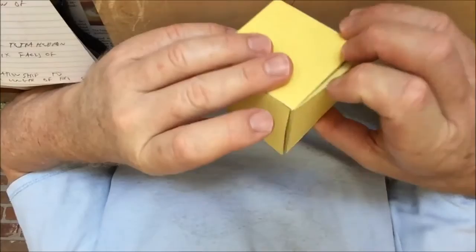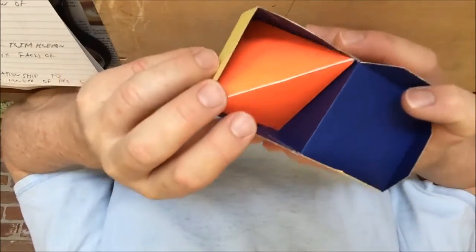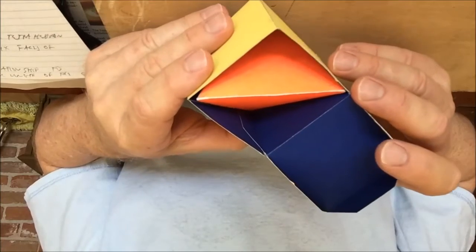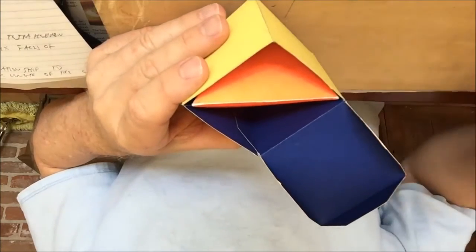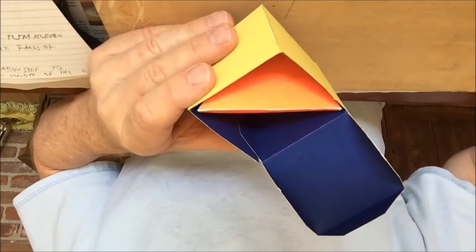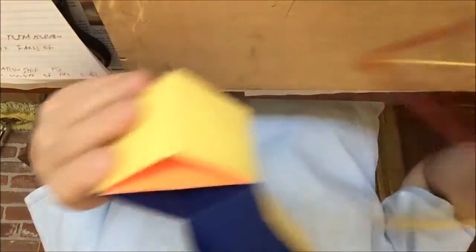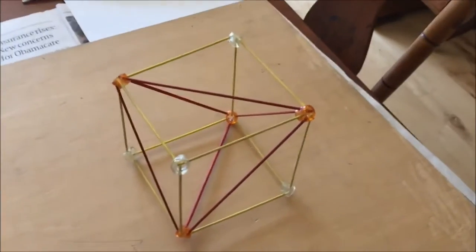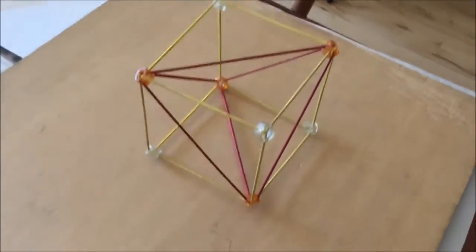The cube wraps around the tetrahedron with an edge of the tetrahedron as a diagonal of each face of the cube. Here is a stick figure view of the same relationship. The six edges of the tetrahedron are diagonals of each of the six faces of the cube.